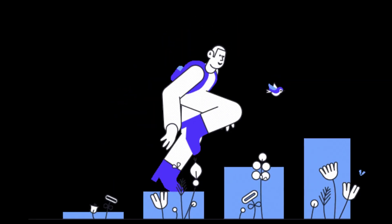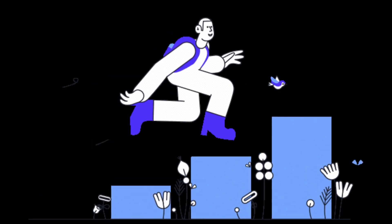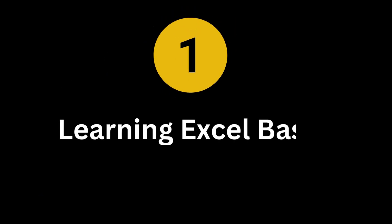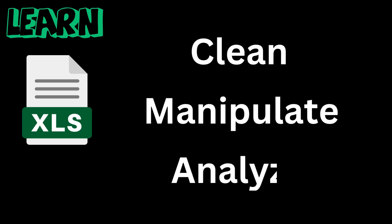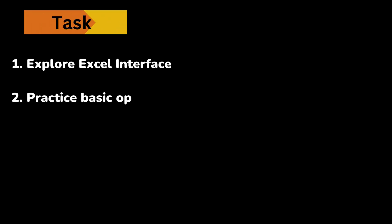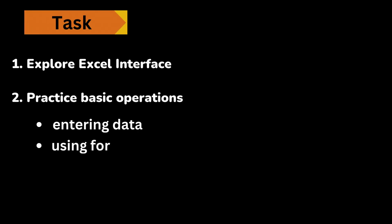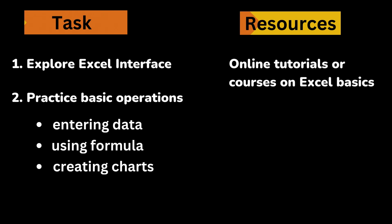What is the training path for becoming a data analyst? Step 1: Learning Excel Basics. Let's begin with Excel, a fundamental tool for data manipulation and analysis. Learn to clean, manipulate, and analyze data using Excel. Tasks: 1. Open Excel and explore the interface. 2. Practice basic operations — entering data, using formulas, and creating charts. Resources: online tutorials or courses on Excel Basics.